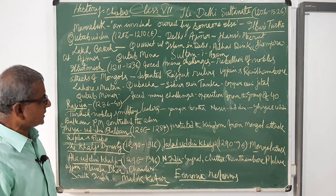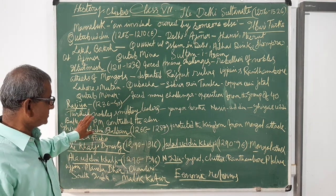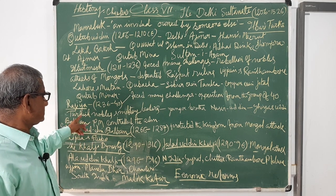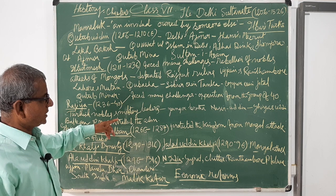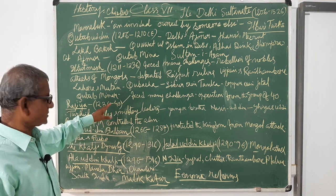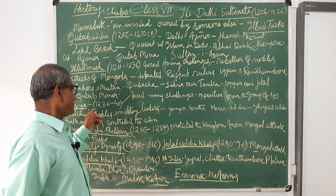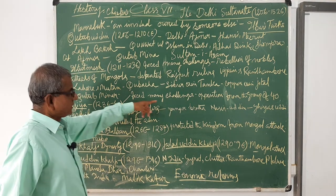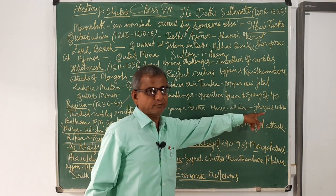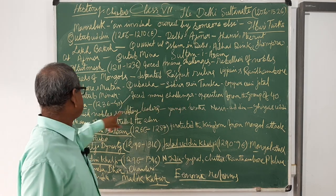But the nobles did not accept Razia. So Ruknuddin Firuz Shah was placed on the throne. However, he was unworthy, so Razia revolted and overthrew her brother to capture power. Razia faced many challenges, particularly opposition from a group of 40 powerful Turkish nobles.